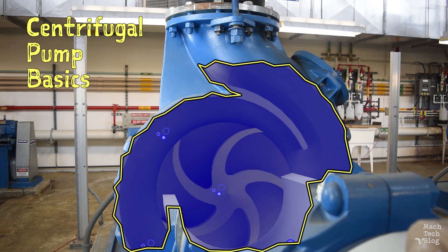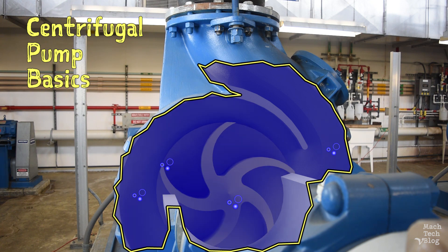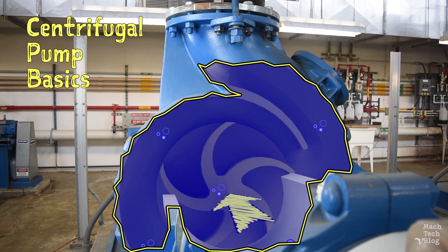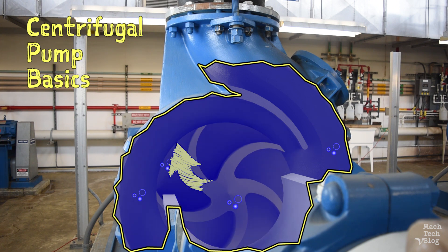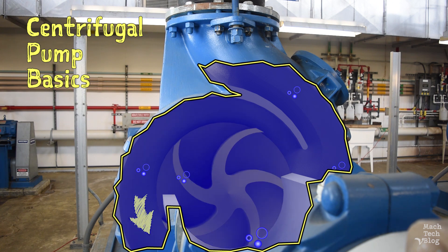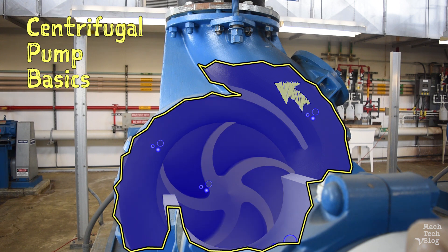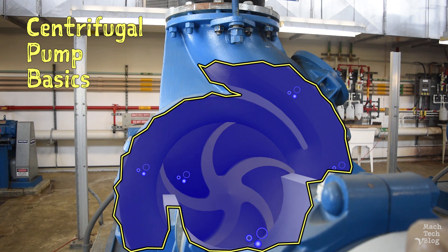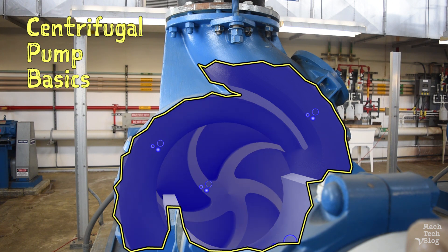Just as a refresher, centrifugal pumps get their name from the way they impart energy to fluid. When fluid enters the pump, it comes into contact with the rotating impeller and is thrown outward by centrifugal force. It travels through a specially shaped chamber called a volute and exits the pump at the discharge outlet. All centrifugal pumps share this basic operating principle, but there are a few possible variations among them.